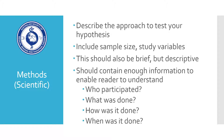The methods section, which applies to scientific abstracts, should describe the approach you have used to test your hypothesis or achieve your aim. It should include the key details of how you conducted your study, including sample size, study variables, who participated, what was done, how it was done, and when it was done. It should contain enough information to enable the reader to understand how you conducted your study.